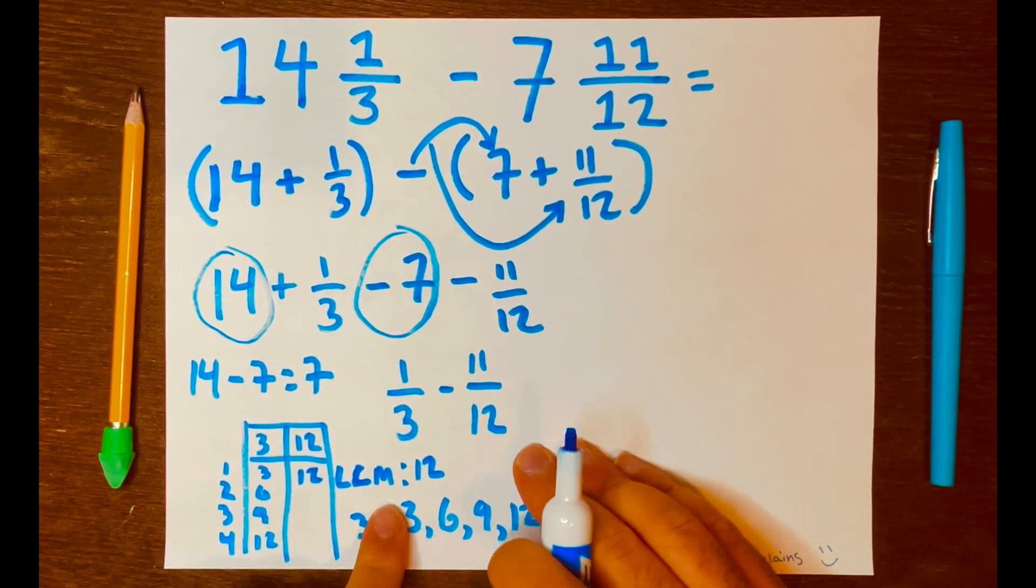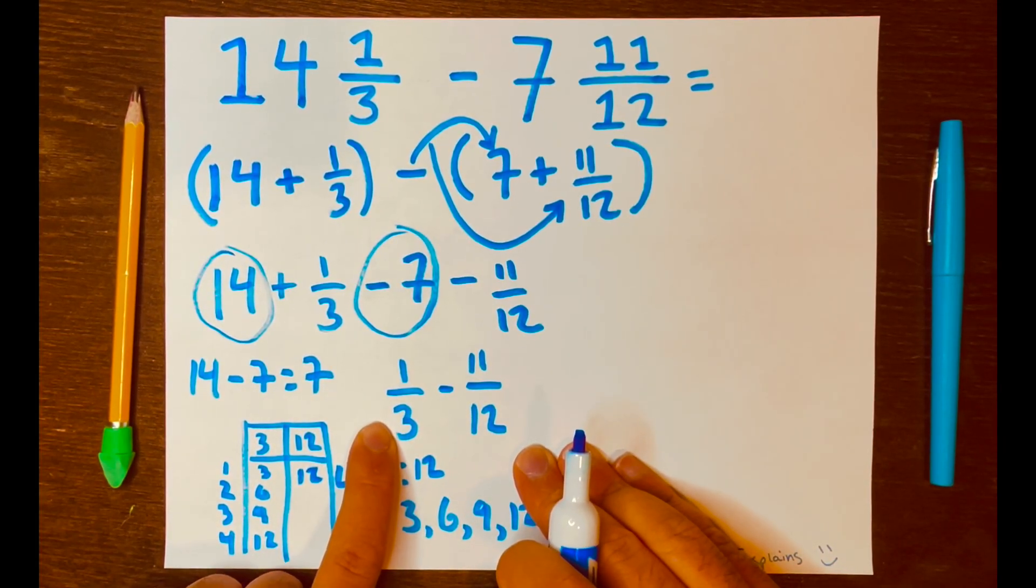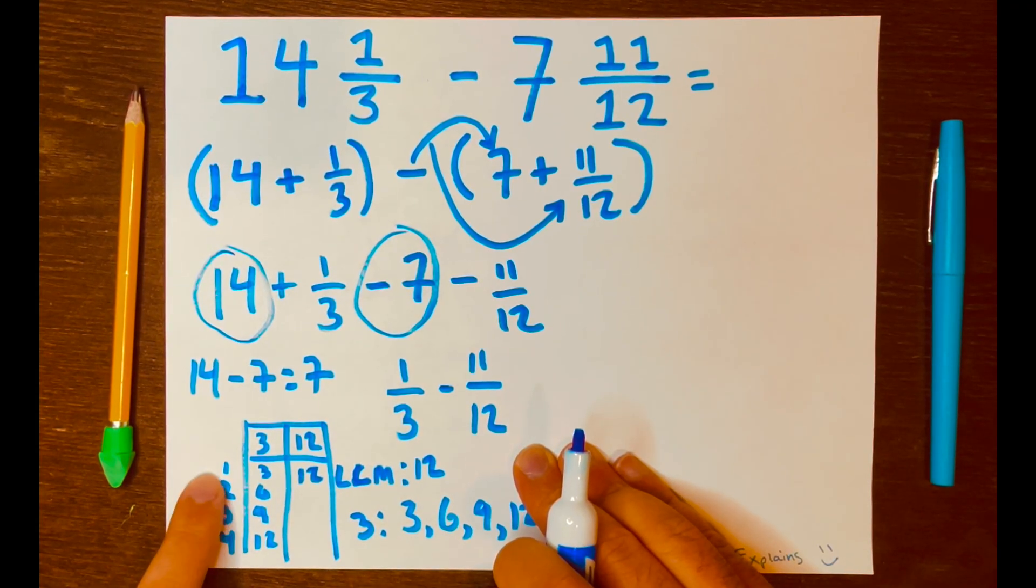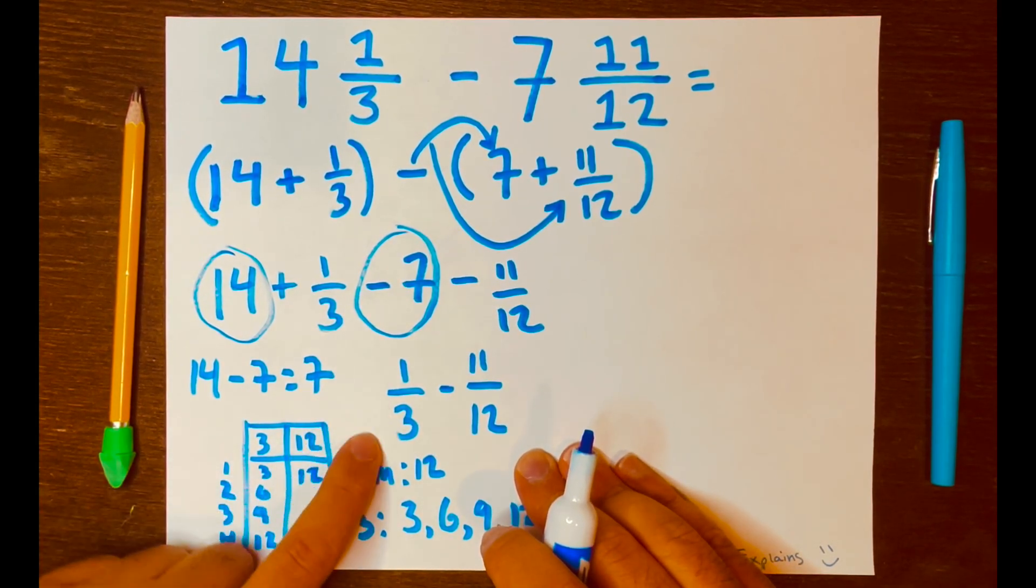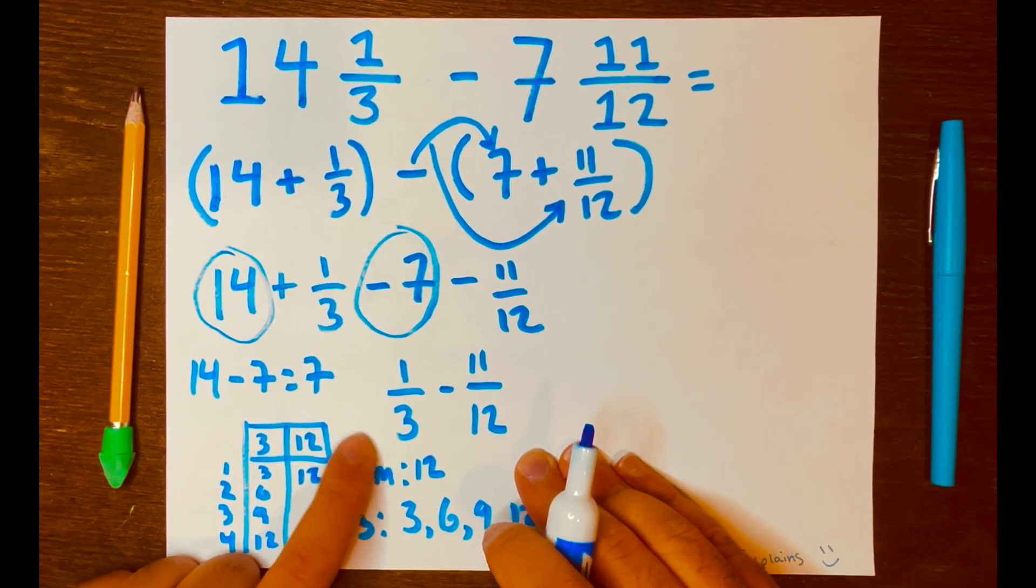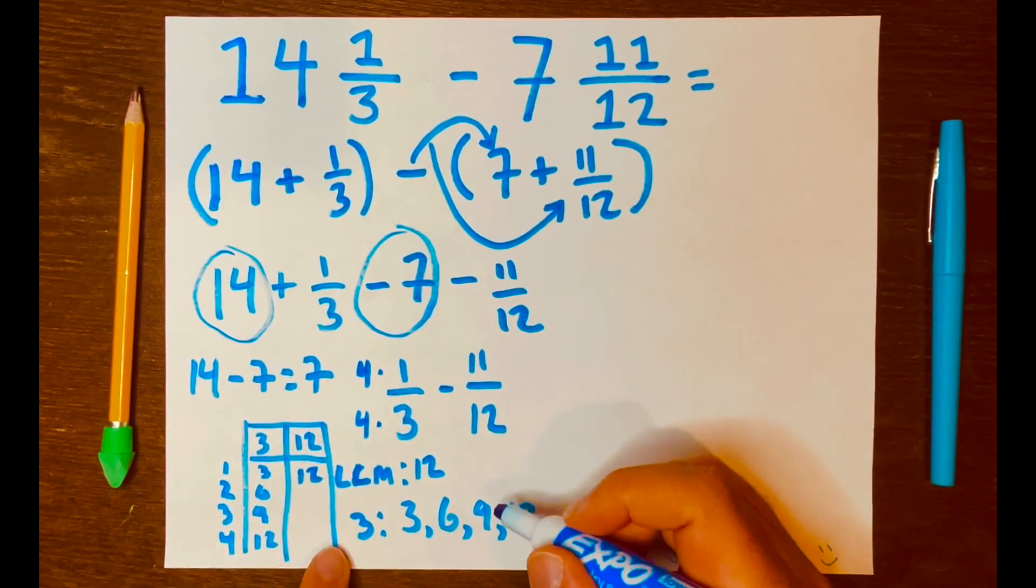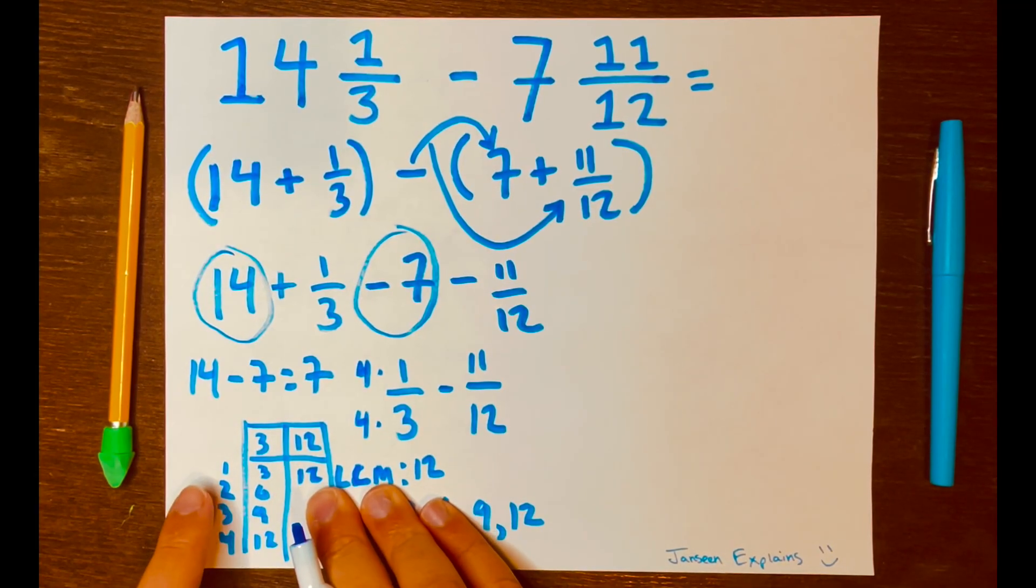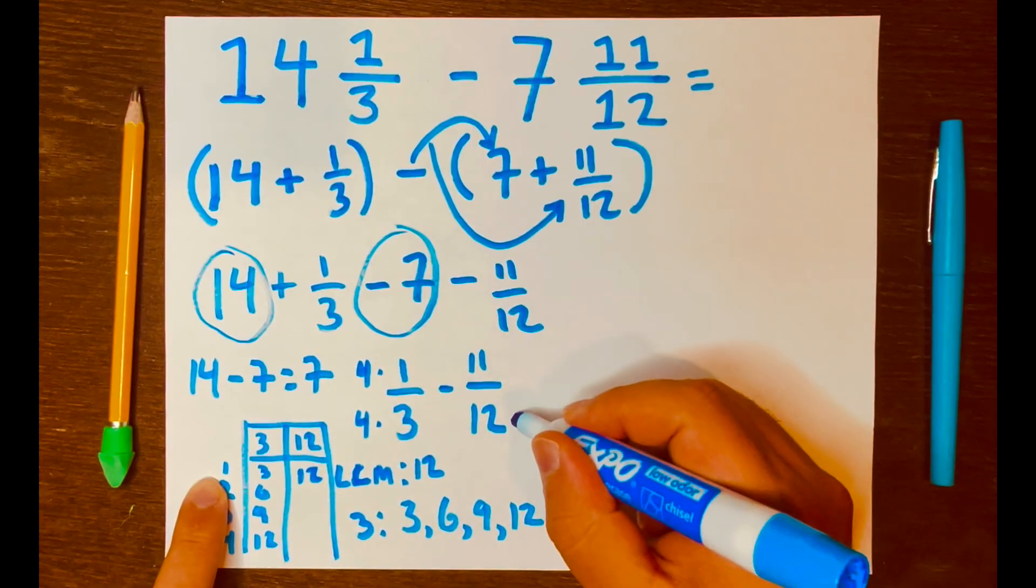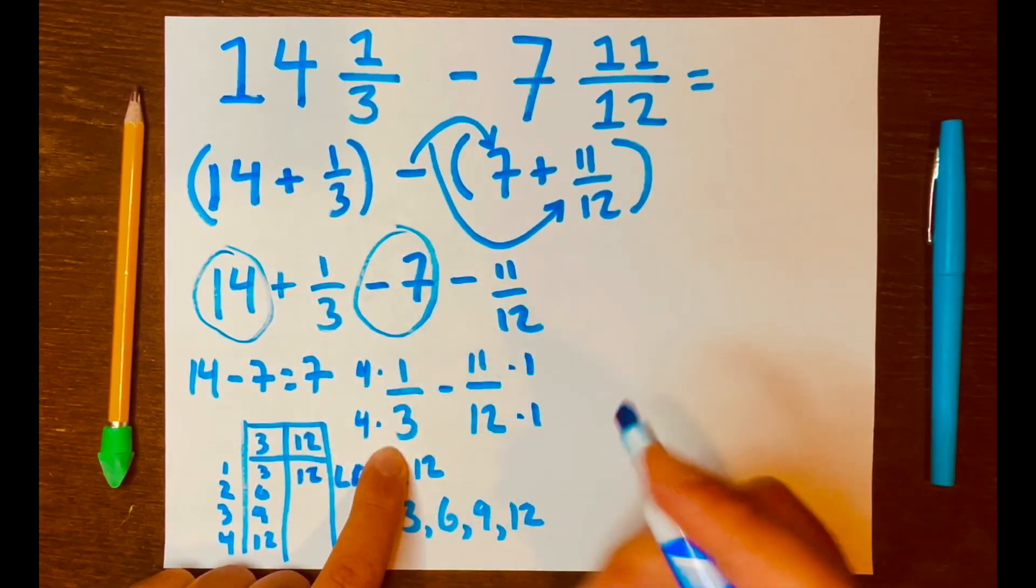Now, we need to turn the denominator 3 into 12. So, we look at the table and see that we used 4 to get our 12. So, we will multiply the top and the bottom of this fraction by 4. So, I'll write the 4 like that. And, same thing here. We look at the 1, and that gave us 12. So, I'll multiply the bottom by 1, and the top by 1, and we just multiply.